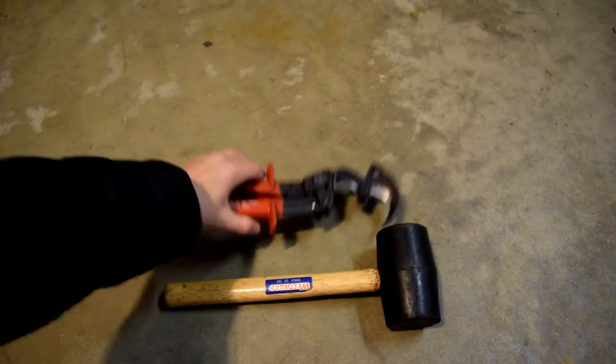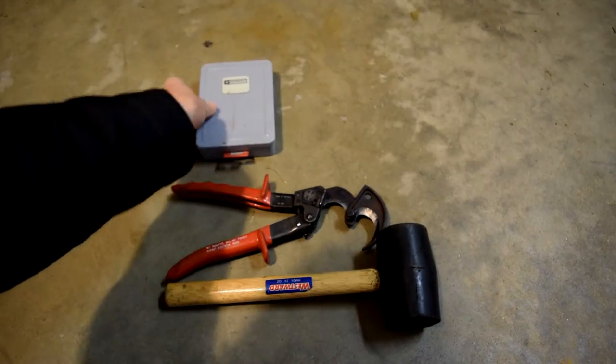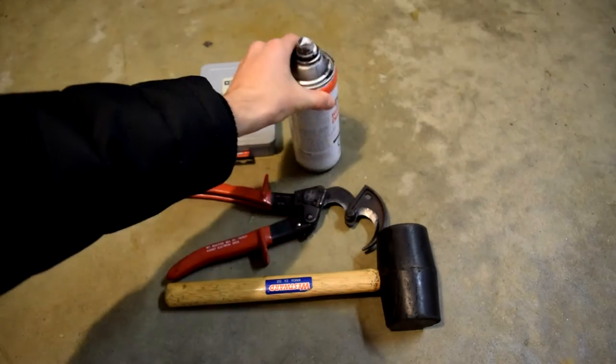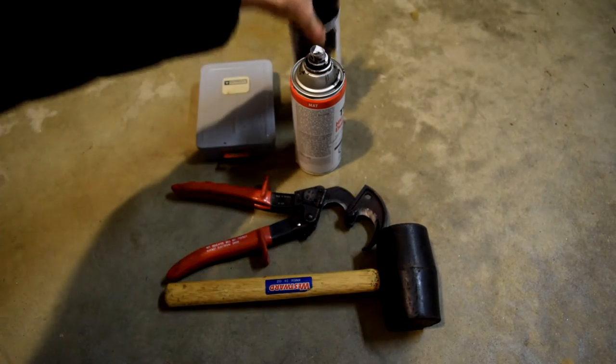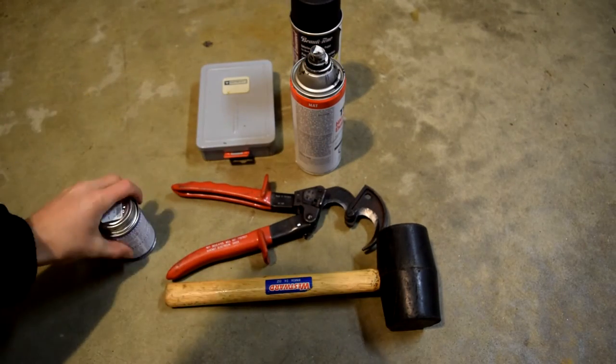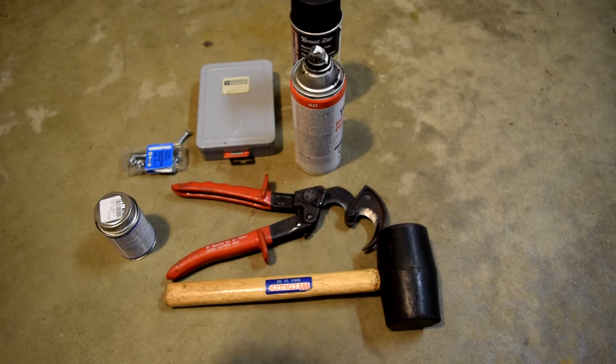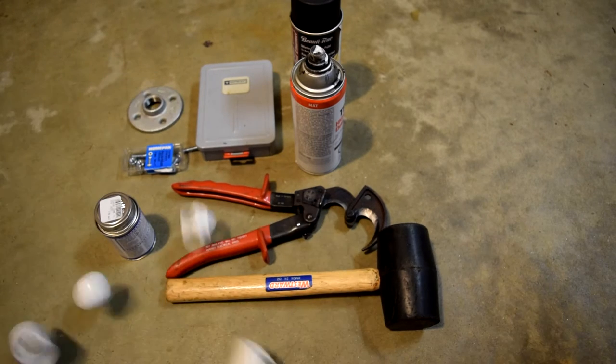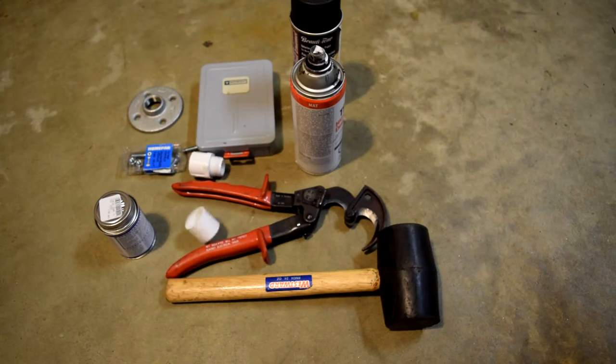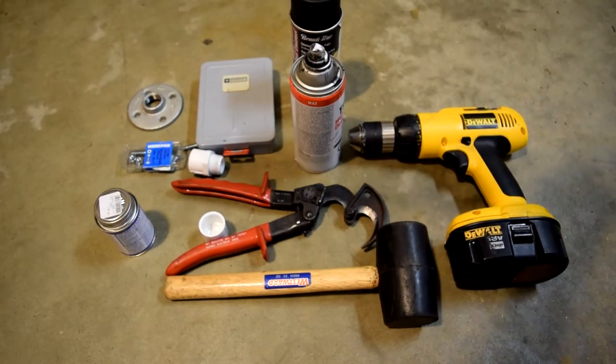To make this awesome DIY steadicam you're going to need something to cut PVC pipe with, spray paint, PVC pipe glue, one quarter by one inch flathead bolts and nuts, a steel pipe flange, two PVC pipe caps, a PVC threaded to smooth adapter, a PVC T-joiner, a drill, and two feet of PVC pipe.